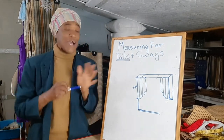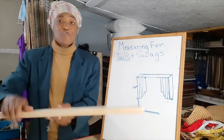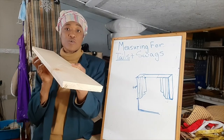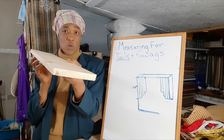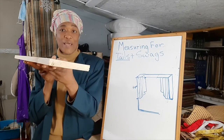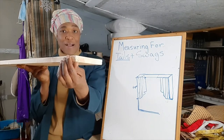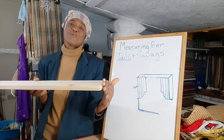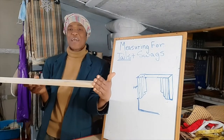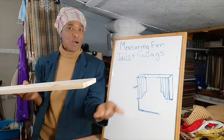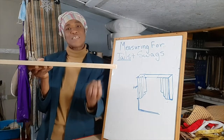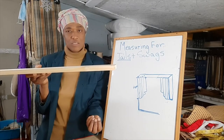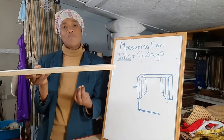Another measurement you can't forget is your return. Pretend this is your mounting board that you will be mounting your tails and swags on. Your mounting board will have a return — that is the part that goes back to the wall, it's the depth of your mounting board. Your return can be anywhere from four inches; it all depends on what you will have sitting under your swags and tails.